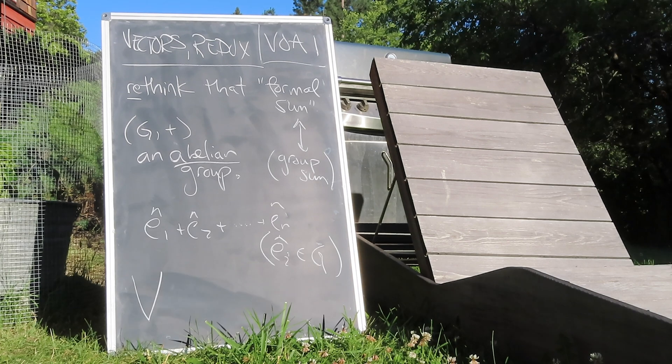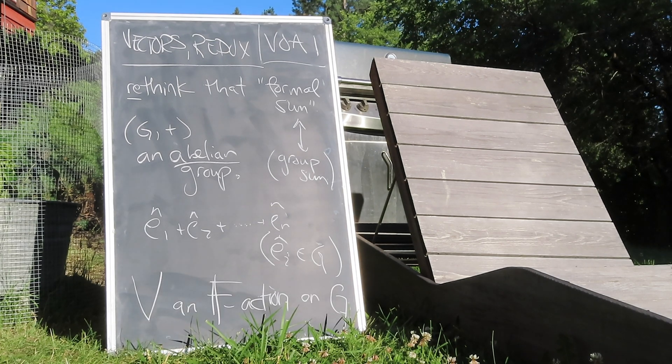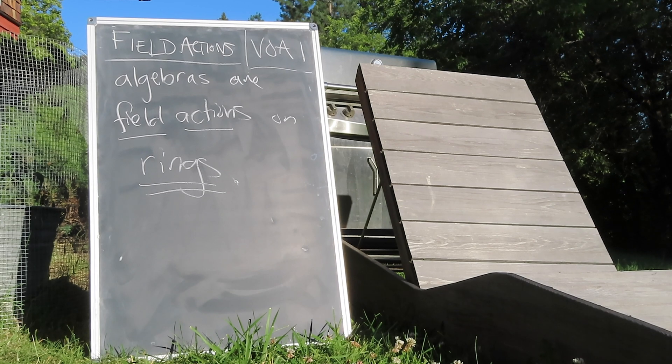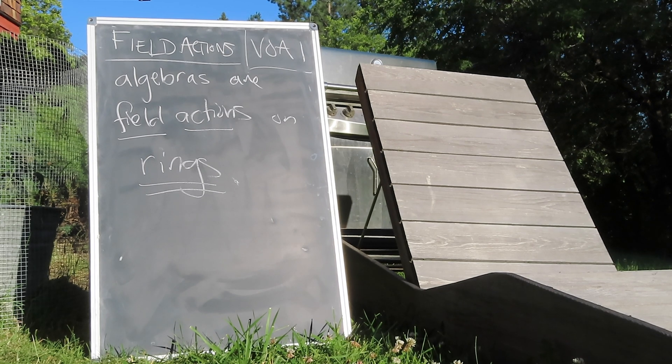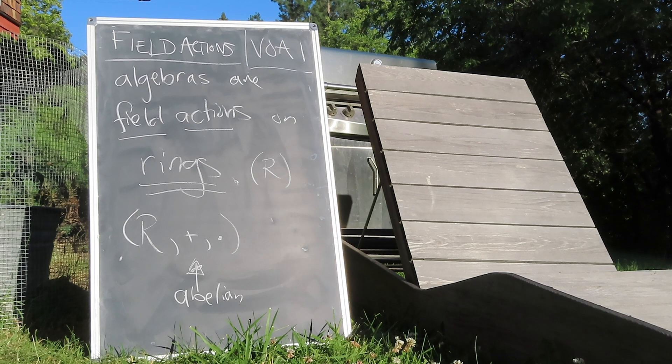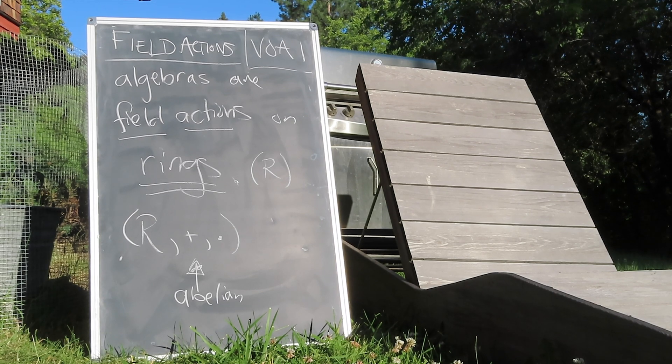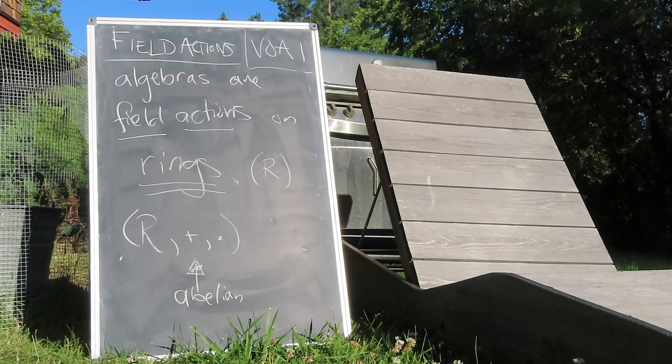From that perspective, we can view the vector space as a field action over that abelian group. And from that perspective, an algebra is a field action over some ring. So that vector multiplication itself is inherited from the base ring multiplication, and therefore has little to do with the operations from our underlying field.